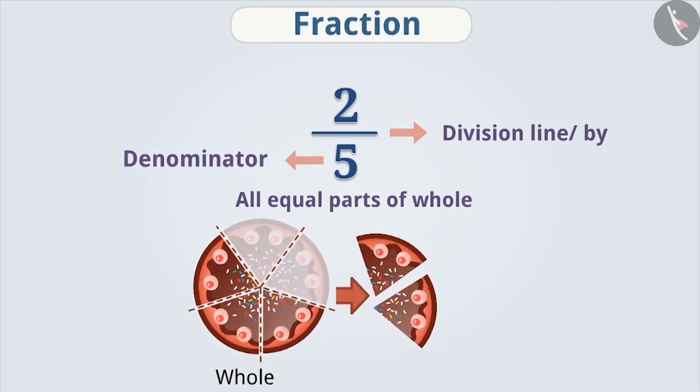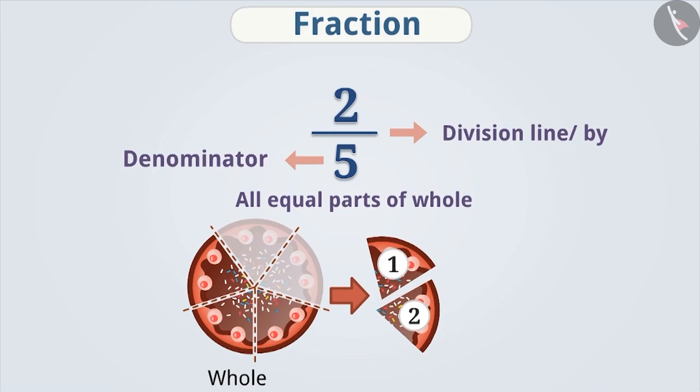The number of parts that are taken aside is represented above the division bar. Therefore, the number of parts that has been considered from all equal parts is called the numerator. In a fraction, the numerator is written above the division bar and the denominator is written below.